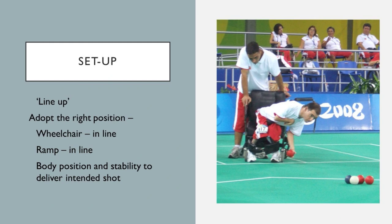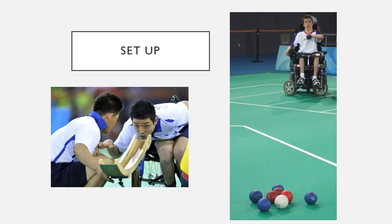For this player, his wheelchair is at the right angle for him to play the shot, his body is in the right position, the chair is stabilized by the assistant, and the body is stabilized through core strength as well as strapping and parts of the wheelchair. For the BC3 player in the first picture, they are in the process of setting up, lining up the ramp — lining up applies to your wheelchair, your body, and if you're a ramp user, your ramp as well.